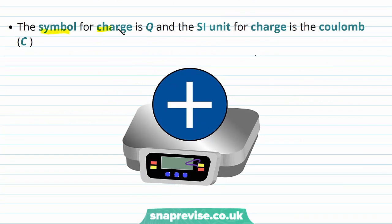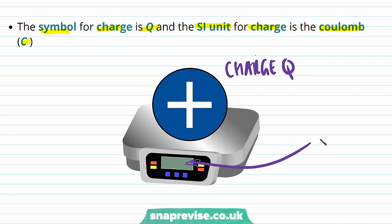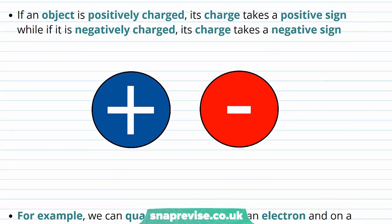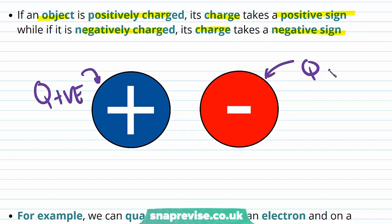The symbol that we use for charge is Q, and the standard unit for charge is the Coulomb, C. So this object possesses some charge Q, and we measure it in units of C. If an object is positively charged, its charge takes a positive sign, while if it is negatively charged, its charge takes a negative sign. So the Q for this object would be positive, whereas the Q for this object would be negative.